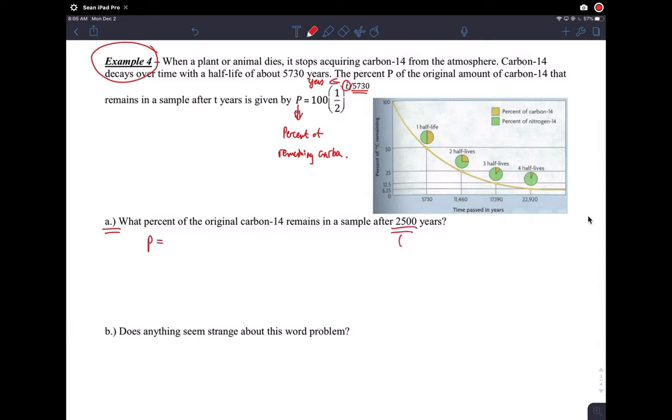So what percent of the original carbon-14 remains after 2,500 years? So I don't have to really think here. I'm just saying, oh, they gave me a T and plug it into the function. So percent is 100% times the decay factor, which is one-half, and then instead of T, I just plug in 2,500 over 5,730. And you just type that straight into your calculator, and you would get the percentage of remaining carbon is about 73.9%. That's it.